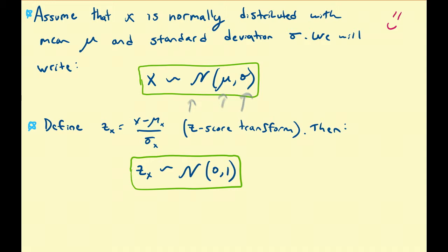Also, as we've discussed in previous videos, we can define what we call the z-score, where the z-score is given by this relation. We take all our values, subtract the mean of that distribution, and then divide that difference by the standard deviation of the population, and that gives us a z-score. That connects two different distributions — the normal distribution and the standard normal distribution. The standard normal distribution has mean zero and standard deviation one, so z-score values are normally distributed with mean zero and standard deviation one.